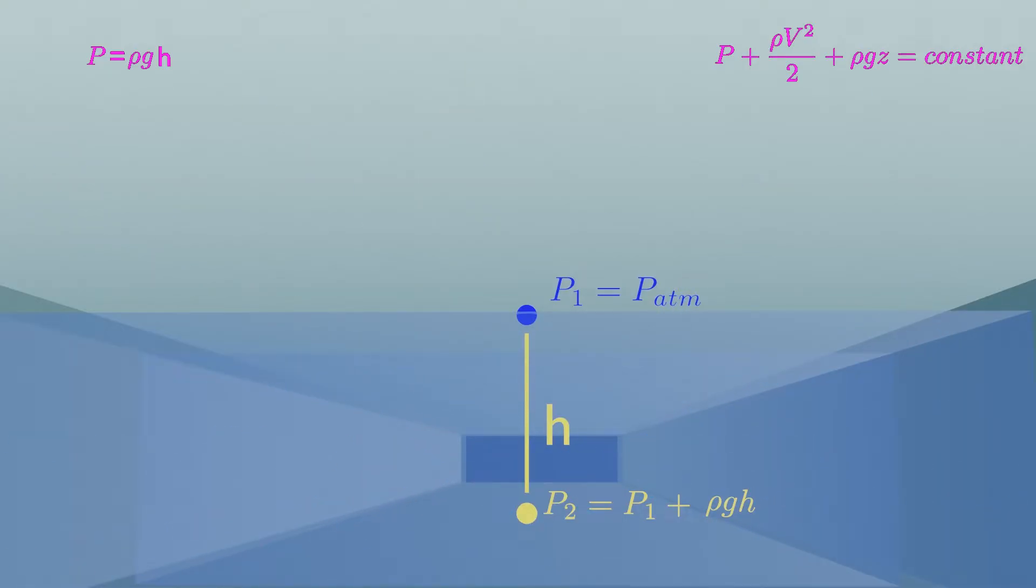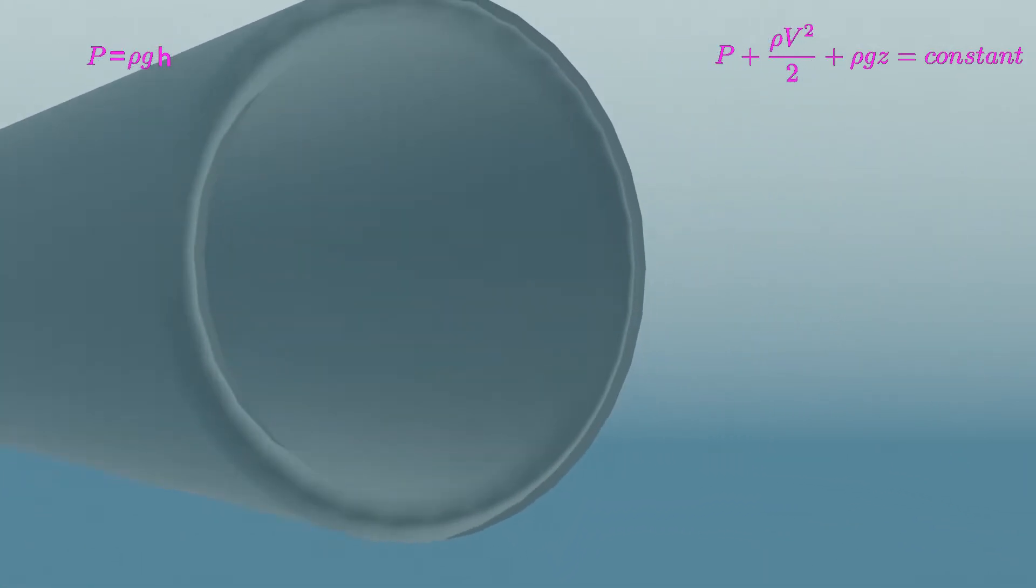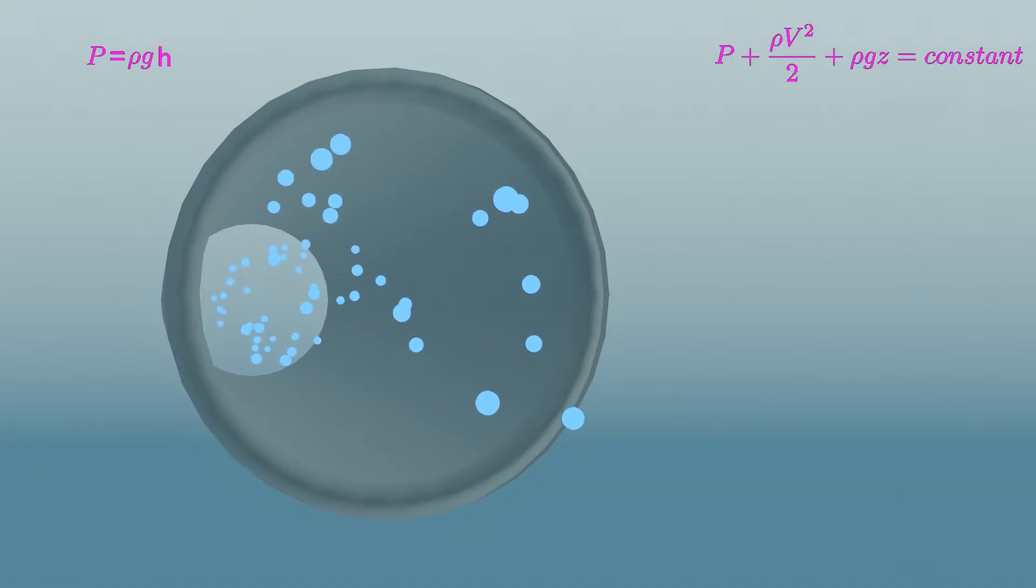But this is not the same case for, say, ideal fluid flowing inside a pipe with constant velocity. Here the fluid is closed inside the pipe and is not open to the atmosphere.